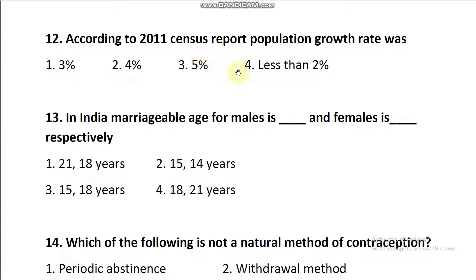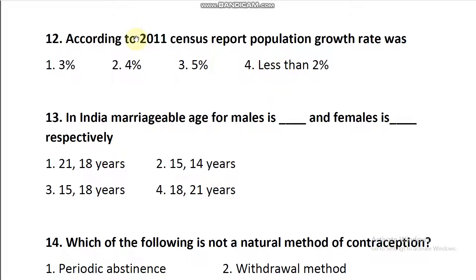In the old NCRT textbook the values given are different — I think 1.7 and something was given — but follow the new NCRT textbook only for all values, as so many modifications have taken place in chapter number four. The answer is less than two percent: for every thousand members, 20 members are newly added as per the 2011 census report.